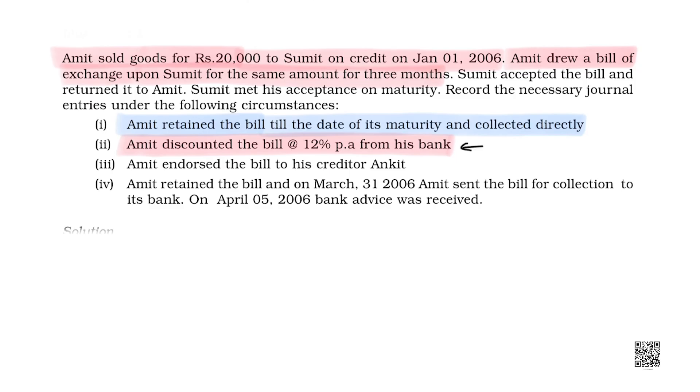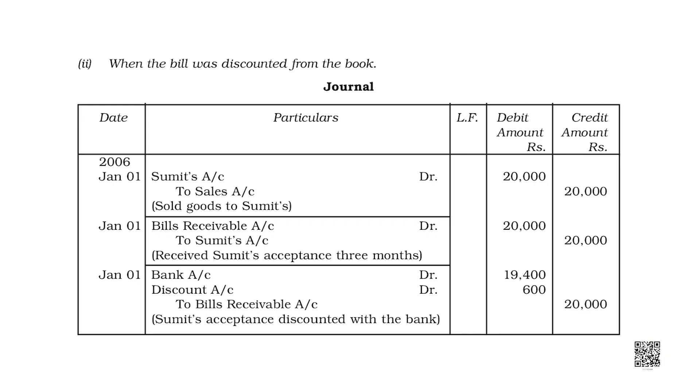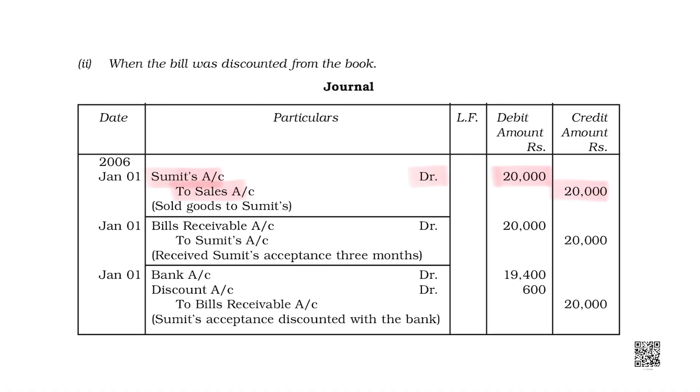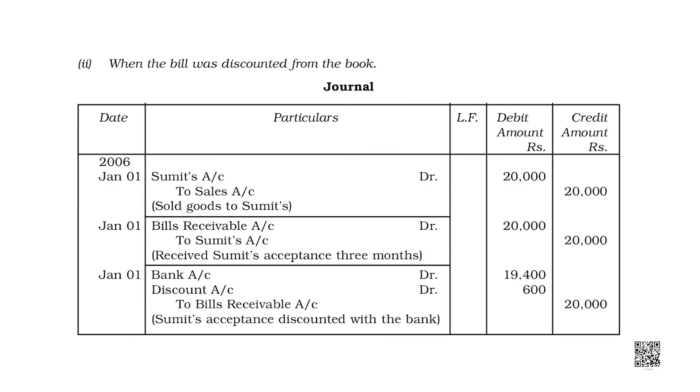Let us see how we draft journal entries when the bill is sent to the bank for discounting. The rate of interest given to us is 12 percent per annum as discounting charges. When the goods are sold to Sumit, Sumit account would be debited because Sumit is my debtor and sales would be credited. Sumit's account debit to sales — that is on 1st January.